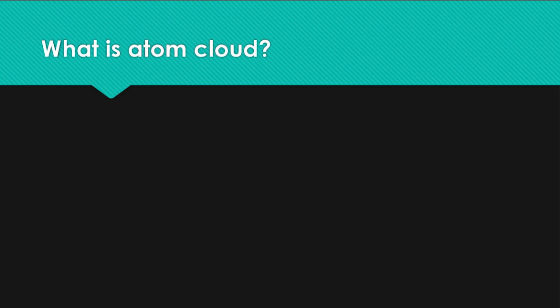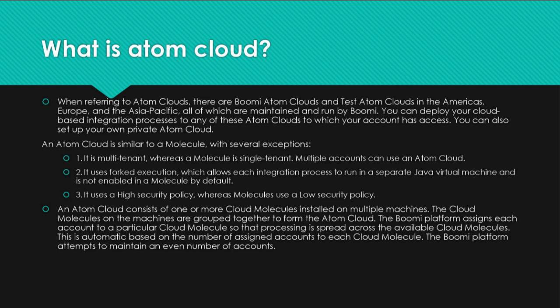Question: What is Atom Cloud? When referring to atom clouds, there are Bumi atom clouds and test atom clouds in the Americas, Europe, and the Asia-Pacific, all maintained and run by Bumi. You can deploy your cloud-based integration processes to any of these atom clouds to which your account has access. An atom cloud is similar to a molecule with several exceptions: it is multi-tenant whereas a molecule is single-tenant, it uses forked execution allowing each integration process to run in a separate Java virtual machine, and it uses a high-security policy whereas molecules use a low-security policy.